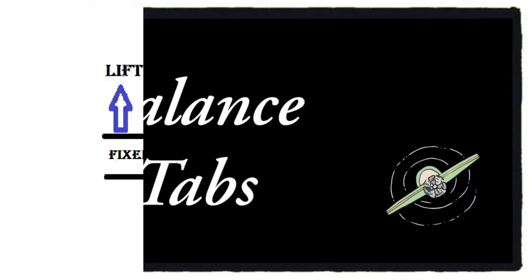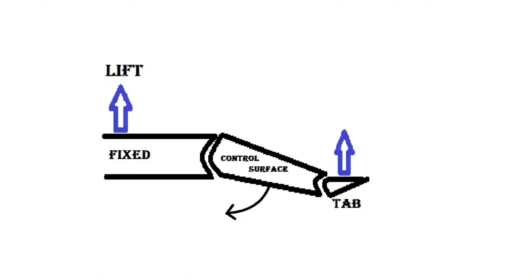Balance tabs: It would be difficult for pilots to operate the primary controls because of their wide surface area and much airflow over it. So balance tabs are used. These are hinged to the primary control surfaces. They are operated in the opposite direction to the desired operation of the control surface. This helps in positioning the control surface with less force than needed.